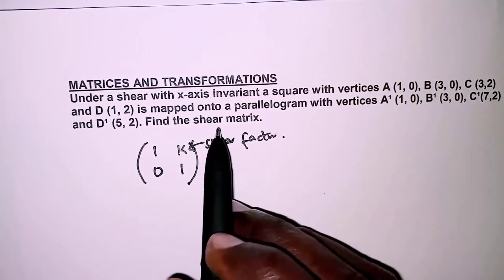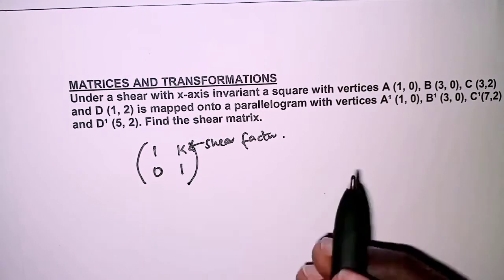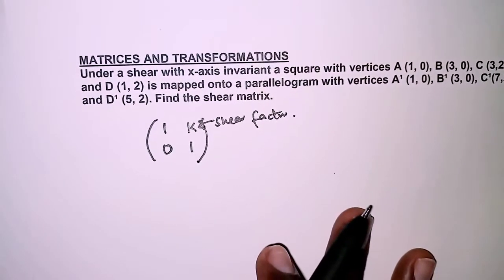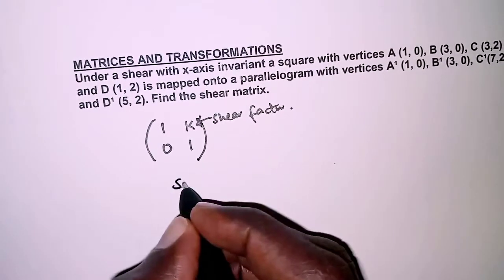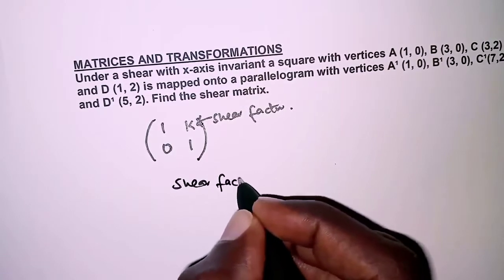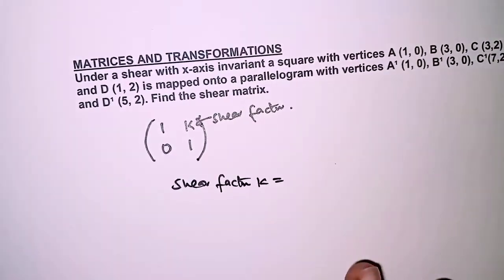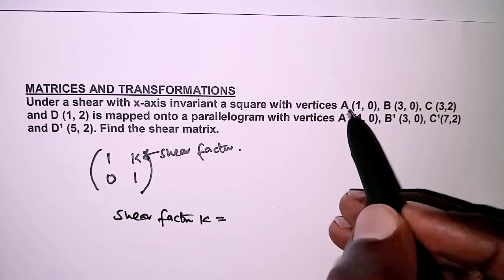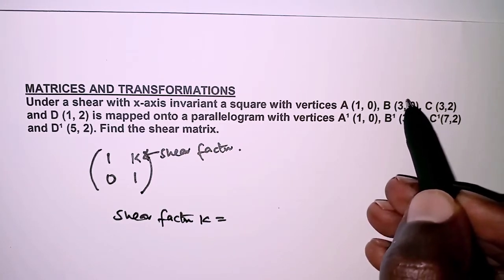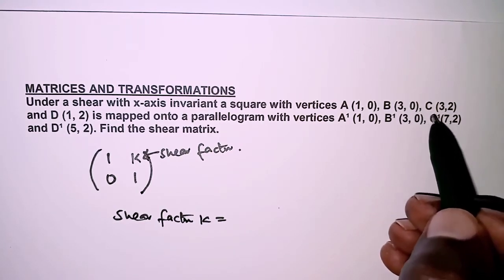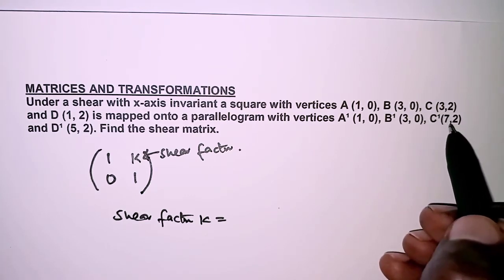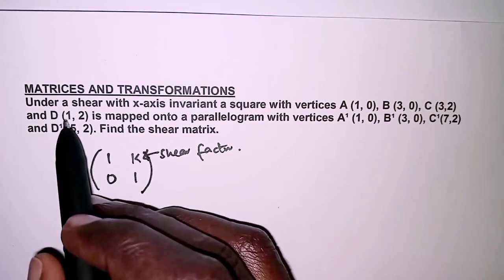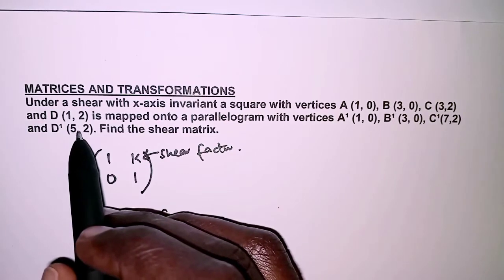To get the matrix we need to find the value of k and substitute it in. Looking at the points, some do not change: A remains (1,0), B remains (3,0). Then C(3,2) is mapped onto C'(7,2), and D(1,2) is mapped onto D'(5,2).